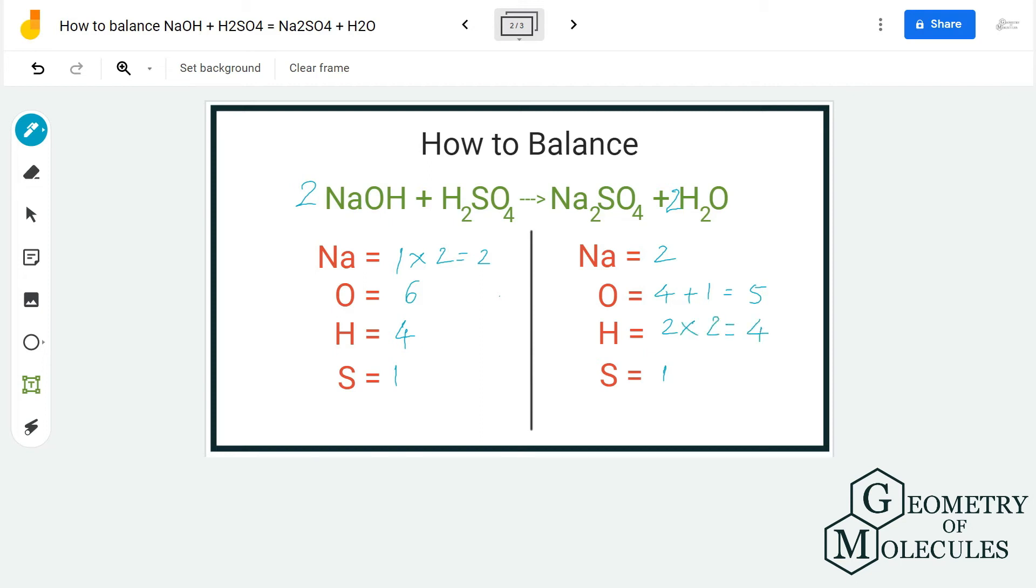Now we can go back to oxygen atom and update the number for that. So now we have 4 plus 2 here, as there are 2 oxygen atoms, so in total we have 6. Sulfur atom will be 1 because there is no change over here.